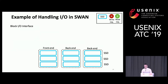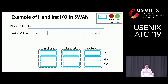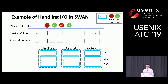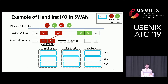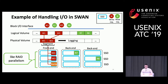SWAN receives all IO requests from the block IO interface, and we maintain logical and physical volumes to manage the array of SSDs. Read and write requests arrive from the block interface — the red circle indicates write requests and green circle indicates read requests. Requests are placed in the logical volume according to block number. Write requests are appended to a segment and distributed across SSDs with parity for recovery, like RAID parallelism. Read requests are served by any SSD holding the requested data block.